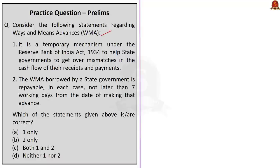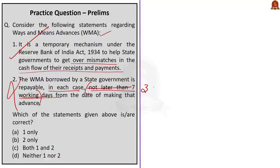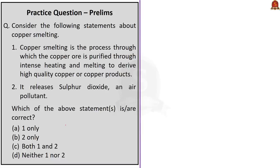The next question is about Ways and Means Advances. First statement: WMA is a temporary mechanism under the Reserve Bank of India Act to help state governments get over mismatches in cash flow of receipts and payments — this is correct. Second statement: the WMA borrowed by a state government is repayable not later than seven working days from the date of making that advance — this is incorrect because according to Section 17, Clause 5 of the RBI Act, this period is three months, not seven working days. The question asks for correct statements, so the correct answer is option A: one only.